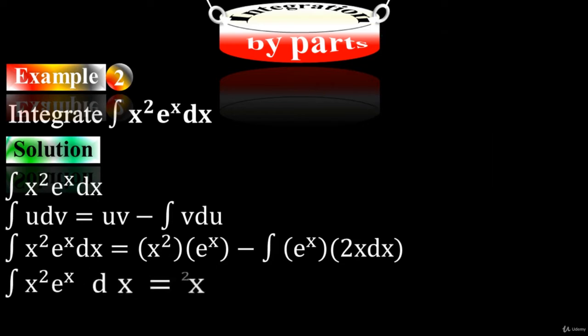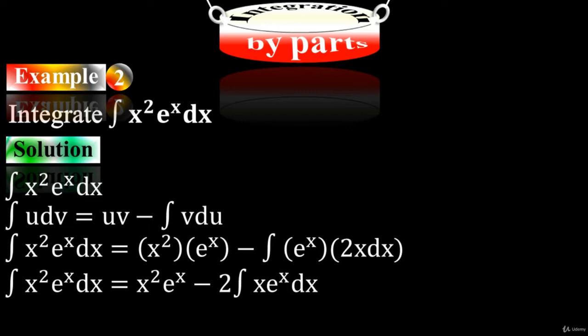Moving ahead, we have x squared times e to the x minus 2 times the integral of x times e to the x dx. Pulling the 2 out of the integration, we still have the product of two terms — x times e to the x — so we need to apply the integral formula again.